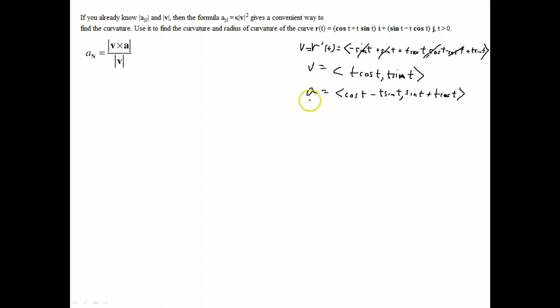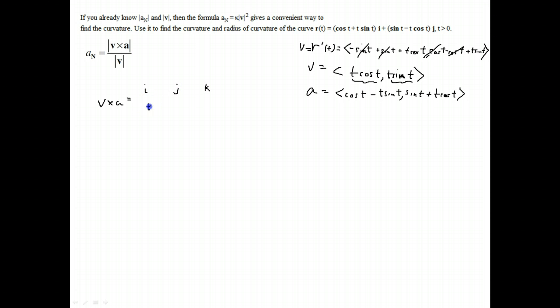If you're going to do a cross product between these vectors, you have to make them three-dimensional. Since these are i and j components, you put k being zero. So velocity cross acceleration would be [t cosine t, t sine t, 0] crossed with [cosine t minus t sine t, sine t plus t cosine t, 0].